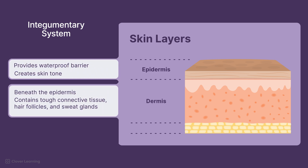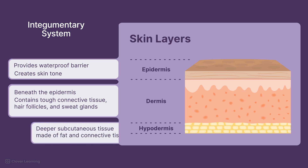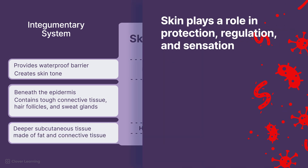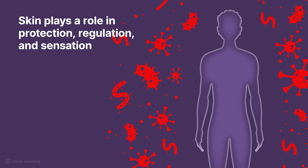Dermis, beneath the epidermis, containing tough connective tissue, hair follicles, and sweat glands. Hypodermis, the deep subcutaneous tissue made of fat and connective tissue. The skin plays a role in protection, regulation, and sensation.